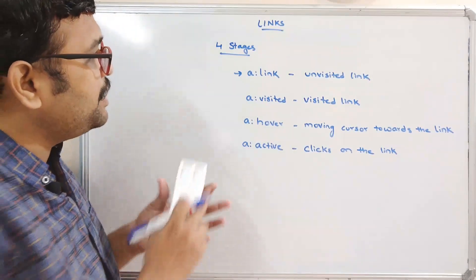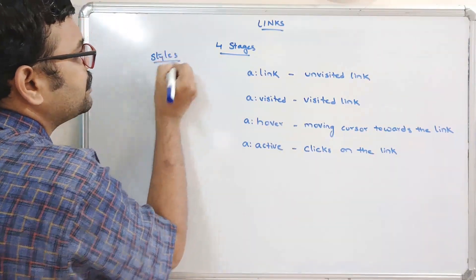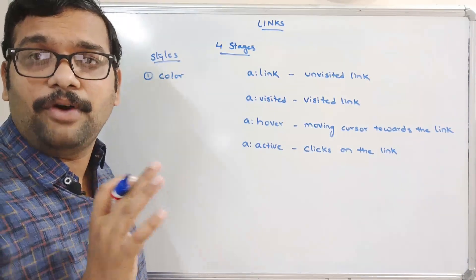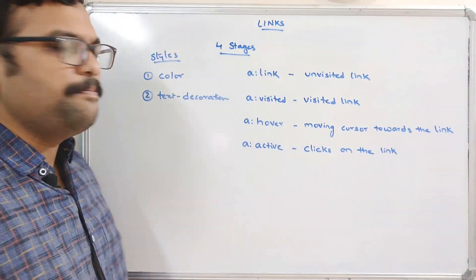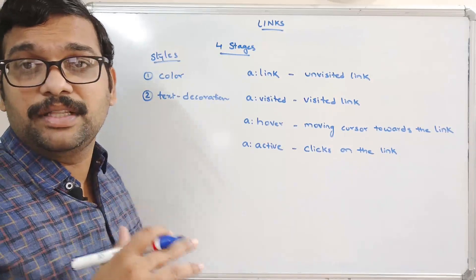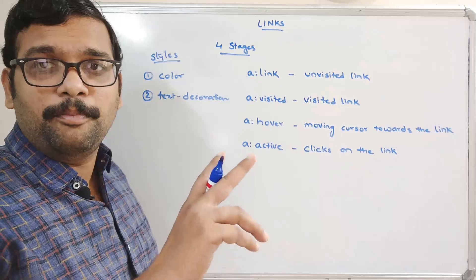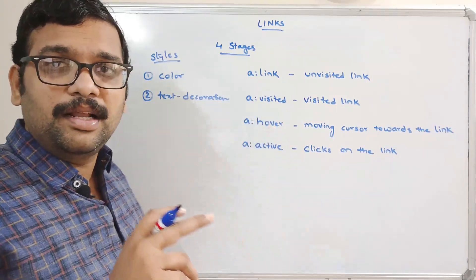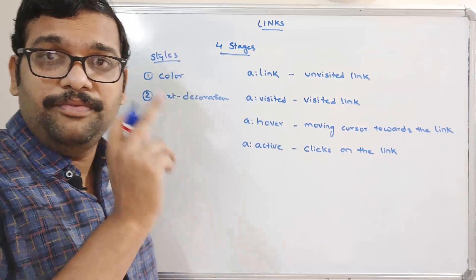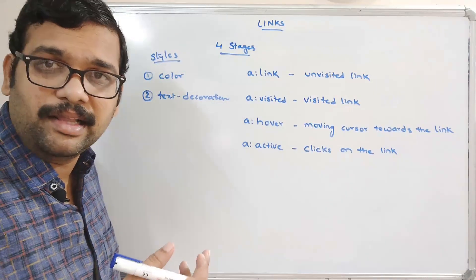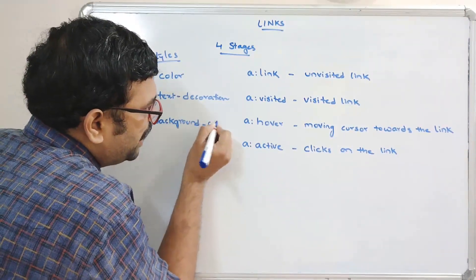We can apply CSS for all these four stages. The CSS styles that can be applied on links are: first, 'color' — a normal color for the font; second, 'text-decoration' — by default if you create any link using the anchor tag, an underline will appear. That underline can be removed using text-decoration; and third, 'background-color' — we can also set the background color for the link.